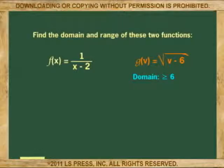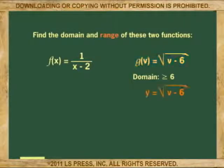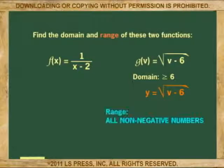Now, as far as the range is concerned, we set up the function and solve for v by saying y equals the square root of v minus 6. Because y is equal to a square root, y may not be negative. Thus, the range of the function is all the non-negative numbers.